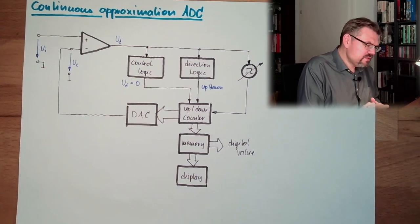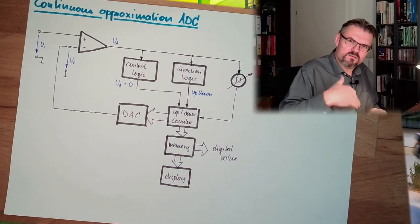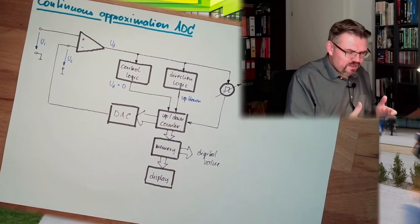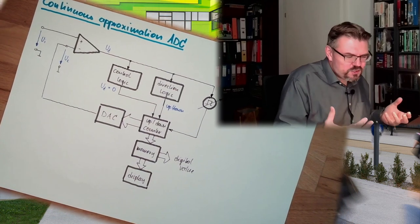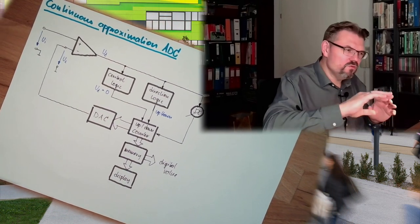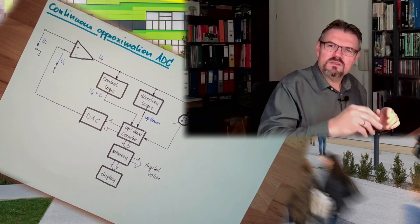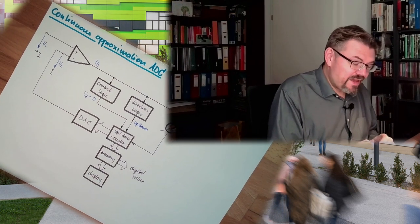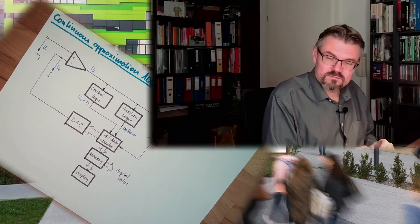On things where Ui is already jumping from one value to another, then the advantage is almost gone. Then you can use other things we have already discussed. It depends a little bit on the input voltage if it is worth the more effort we have to put in to benefit from this continuous approximation.